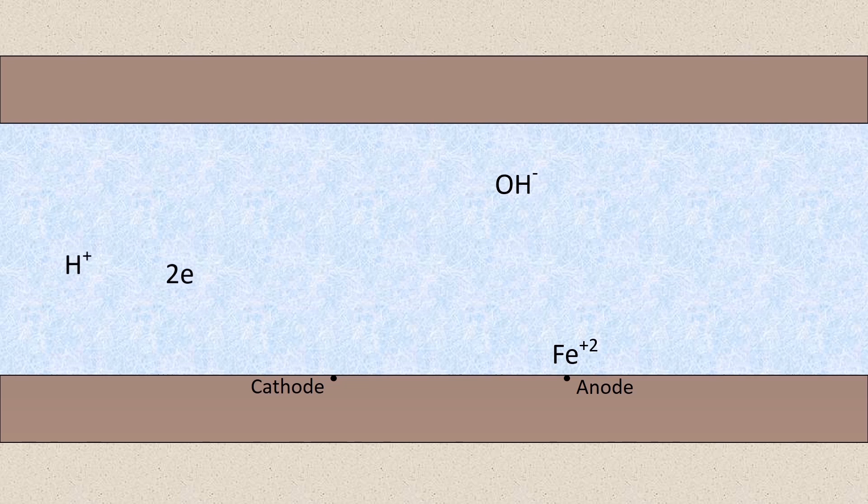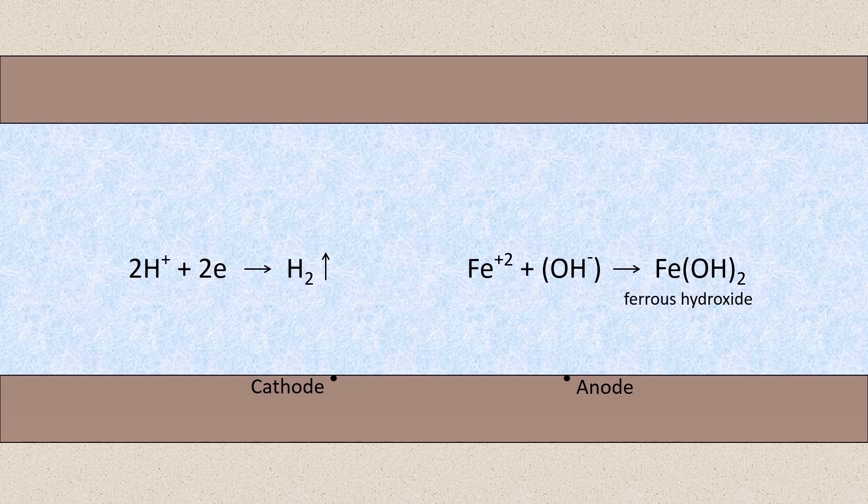What happens is these electrons will combine with the hydrogen and form a hydrogen gas. And the hydroxyl radical will combine with the iron and form ferrous hydroxide. So there's this chemical reaction that's occurring between the iron and the electrons that are given off as the iron goes into solution. It's reacting with the chemical reaction in the water, the dissociation of the water molecules, and it's forming hydrogen and ferrous hydroxide.